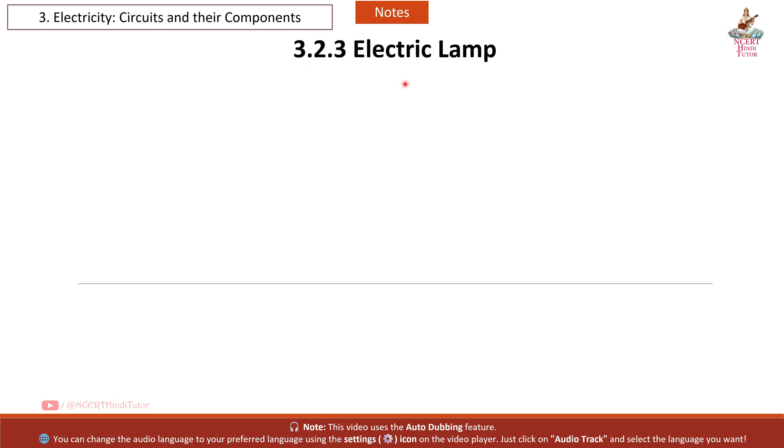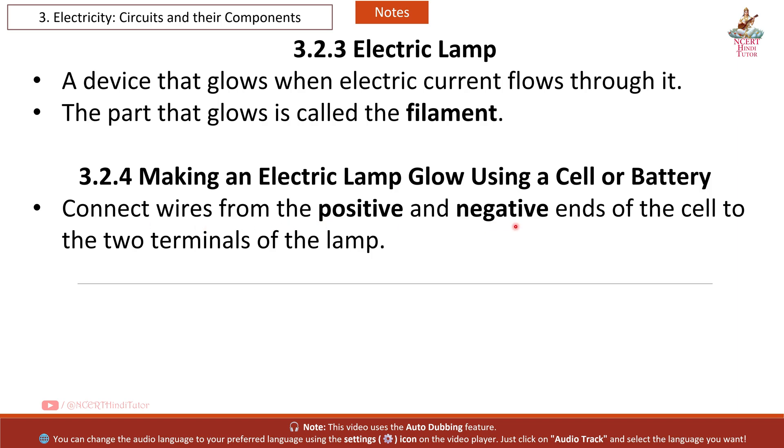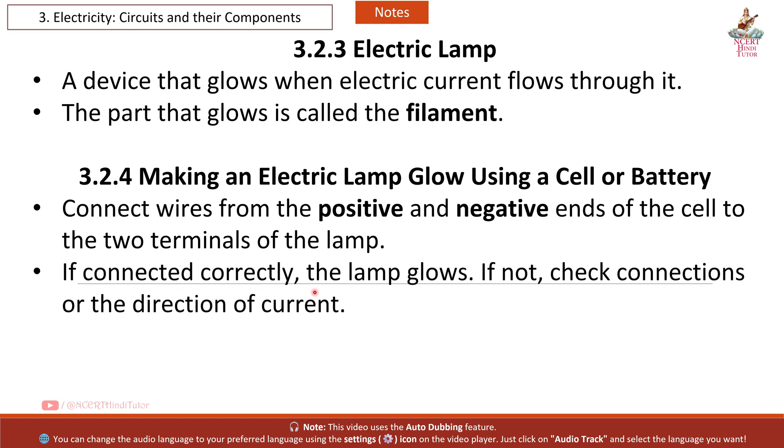3.2.3 Electric Lamp. A device that glows when electric current flows through it. The part that glows is called the filament. 3.2.4 Making an electric lamp glow using a cell or battery. Connect wires from the positive and negative ends of the cell to the two terminals of the lamp. If connected correctly, the lamp glows. If not, check connections or the direction of current.